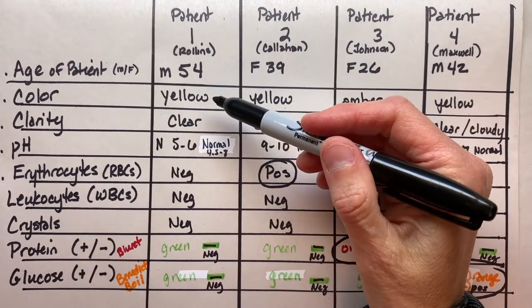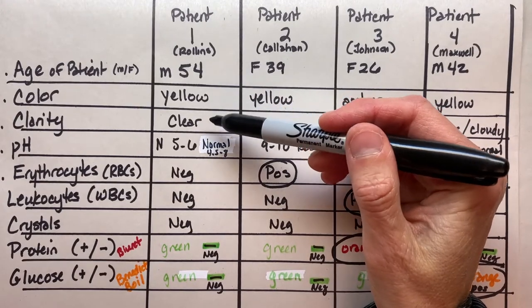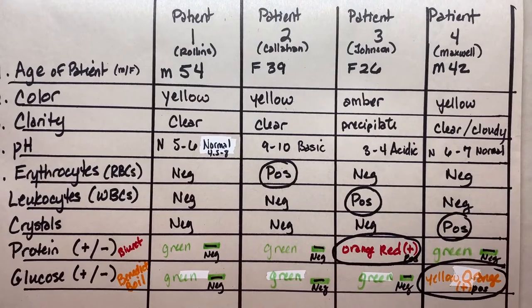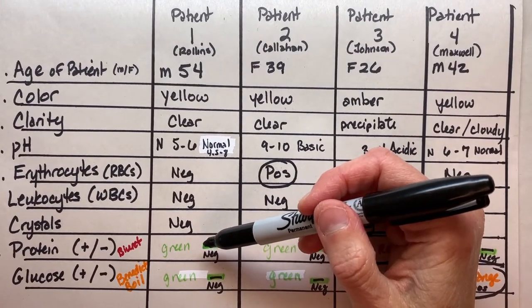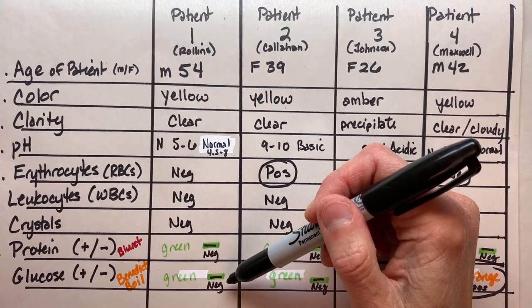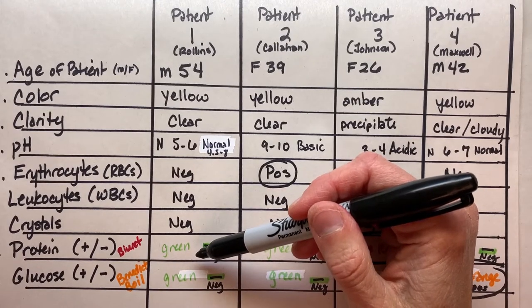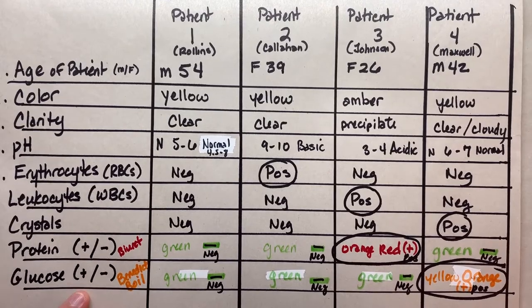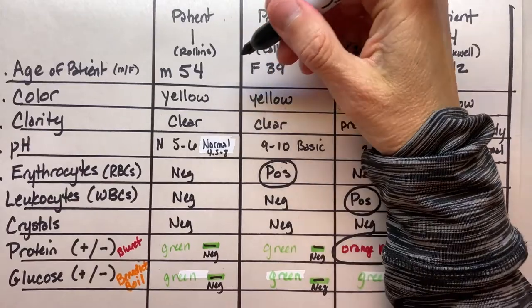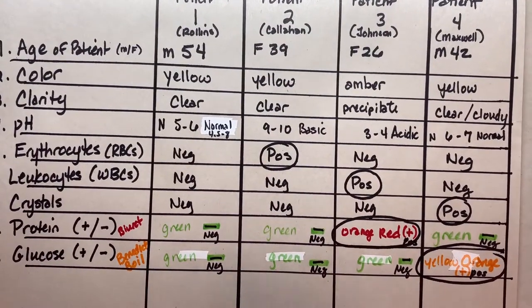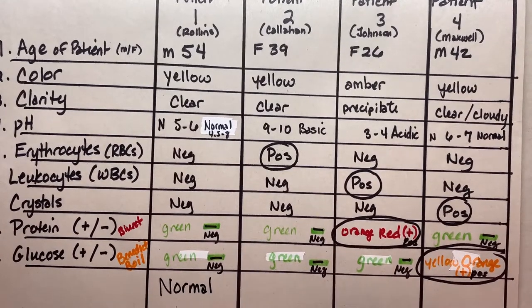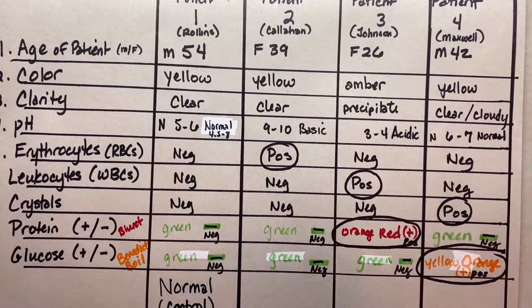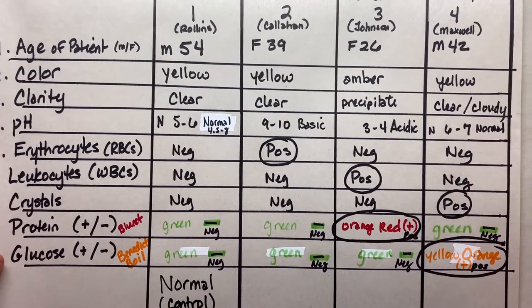Let's look at these and come up with some possibles for diagnosis. Patient number one, that male who's 54 - let's look at how his urine played out. It's yellow, clear. It had a 5 to 6 pH, and note that normal is 4.5 to 8. It was negative for red blood cells, negative for white blood cells, and negative for crystals. Also negative for protein and negative for sugar. Remember that negative for both the Biuret and Benedict tests - negative was green for those. So patient number one is really our control patient. The diagnosis for Mr. Rollins is normal.